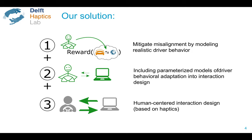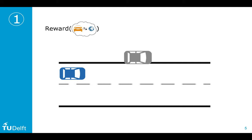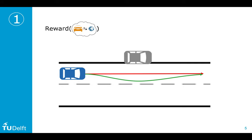Our approach is often based on haptics, as you'd expect from a haptics lab, but not solely. An important source of misalignment between a driver and an automated vehicle is the trajectory the vehicle plans and follows. For example, a common strategy is to follow the center of the lane, but drivers prefer to steer away from parked cars even when not in immediate danger, resulting in conflicts.